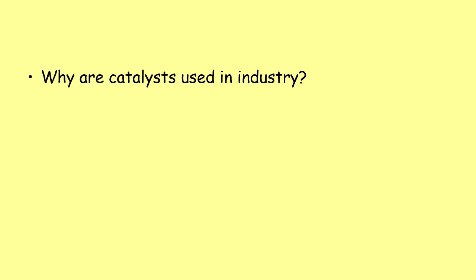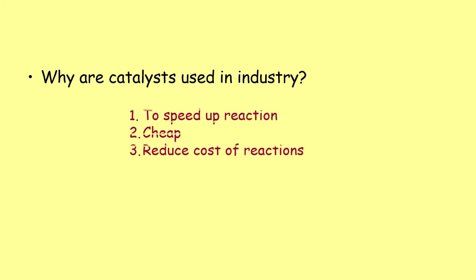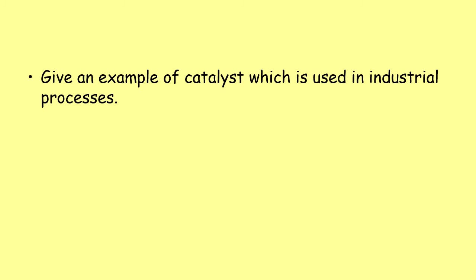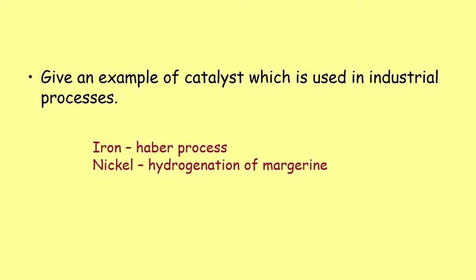Question three: why are catalysts used in industry? Catalysts are used to speed up the reaction. They are cheap because they can be reused, and they reduce the overall cost of reactions. Question four: give an example of a catalyst used in an industrial process. Examples include iron for the Haber process (making ammonia), nickel for the hydrogenation of oils to make margarine, and platinum for catalytic converters or the Ostwald process.